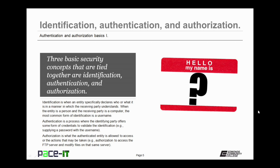Authentication is a process where the identifying party offers some form of credentials to validate the identification, as in supplying a password with the username. Authorization is what the authenticated entity is allowed to access, or the actions that may be taken by that authenticated entity — as in authorization to access the FTP server and modify files on that same server. That would require authorization.